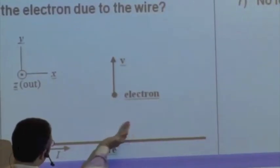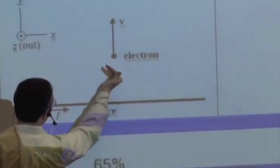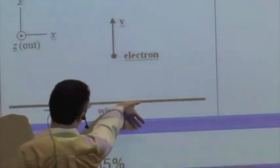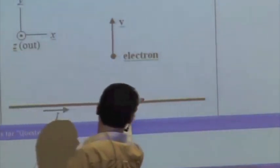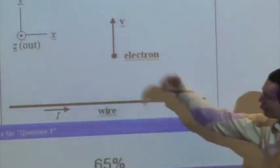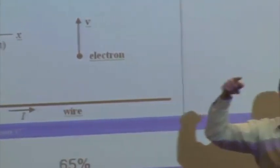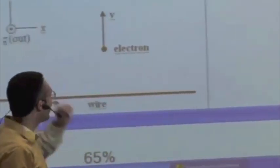So I is that way. R is up. I delta L cross R gives your thumb pointing out. Or you could point your thumb in the direction of the conventional current, curl your fingers around the back and then your fingers are pointing out. Either way, the magnetic field is pointing out of the board at the observation location of the electron.